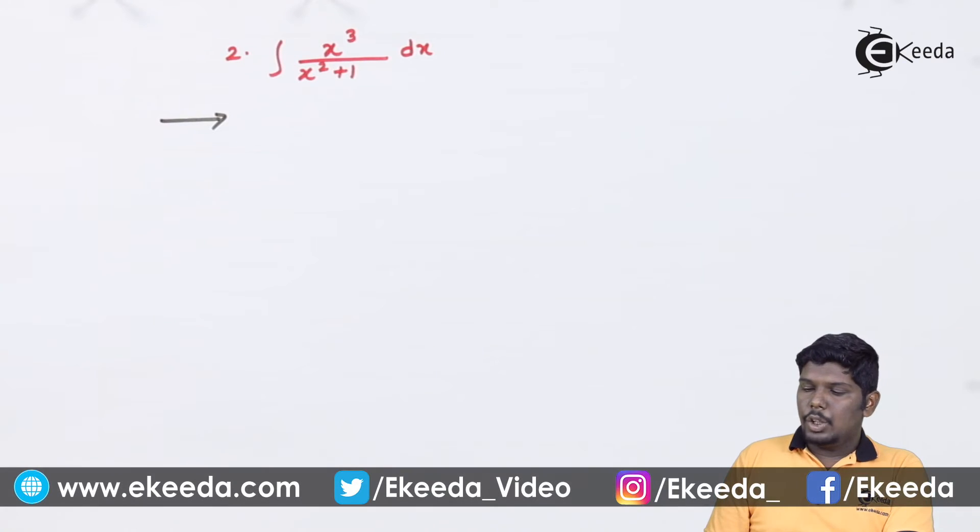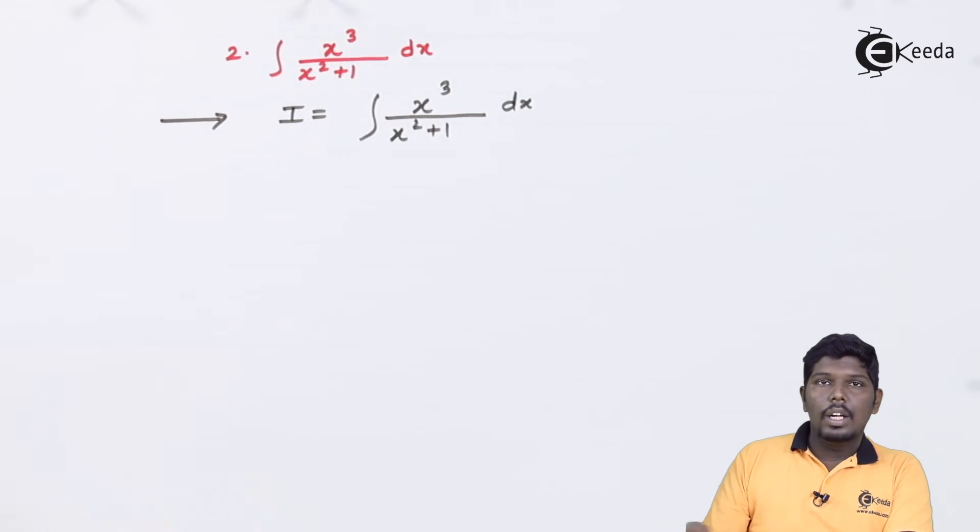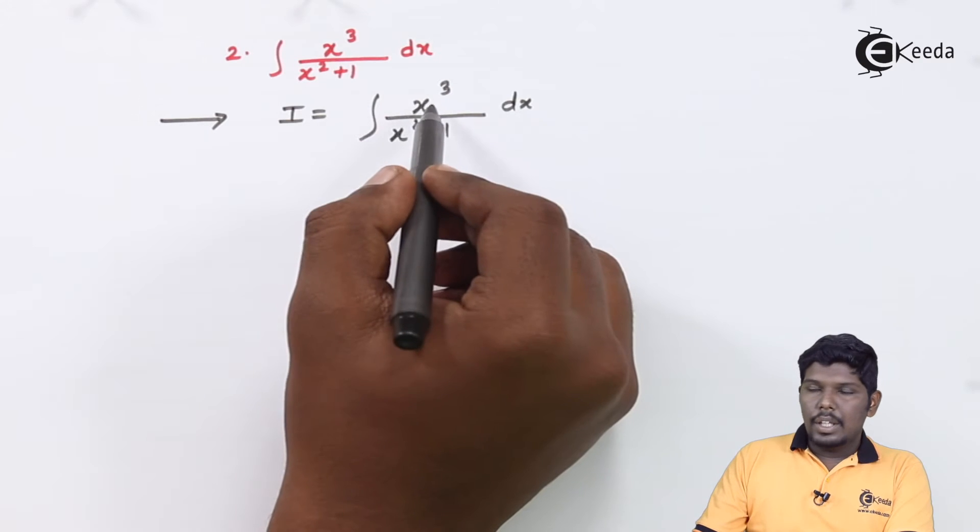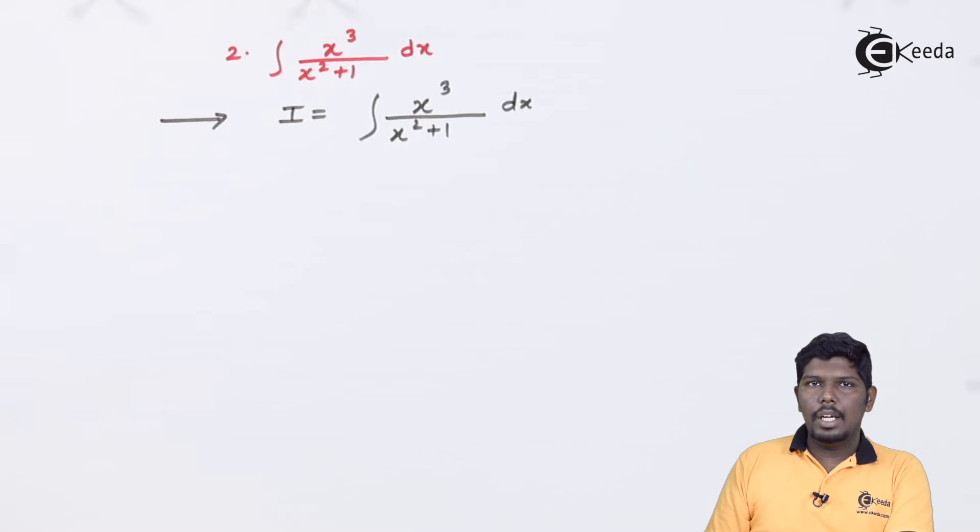Integral x³/(x²+1) dx. As you can see, this function is a pure algebraic function and the maximum power of numerator is greater than or equal to the maximum power of denominator. In that case, we must divide the equation.